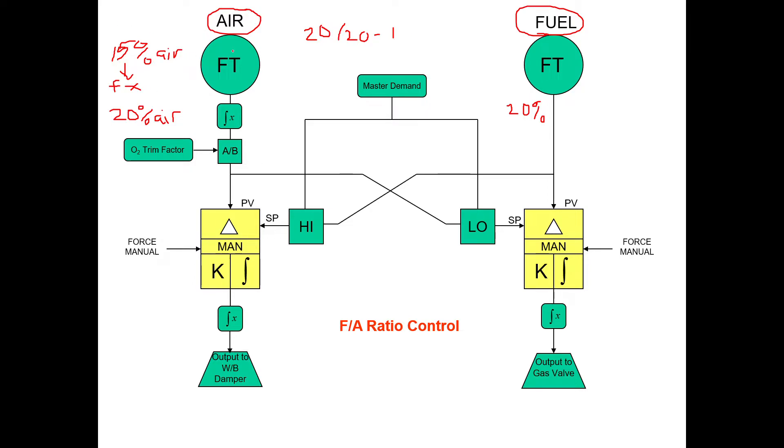Anyway, so we're going to take the air from the flow transmitter, and again remember, if it's a DP style flow—that was a really crappy orifice there—where you're measuring a DP, then you've got to always remember that flow is going to be the square root of the DP. Don't forget that, I'll quiz you on it.